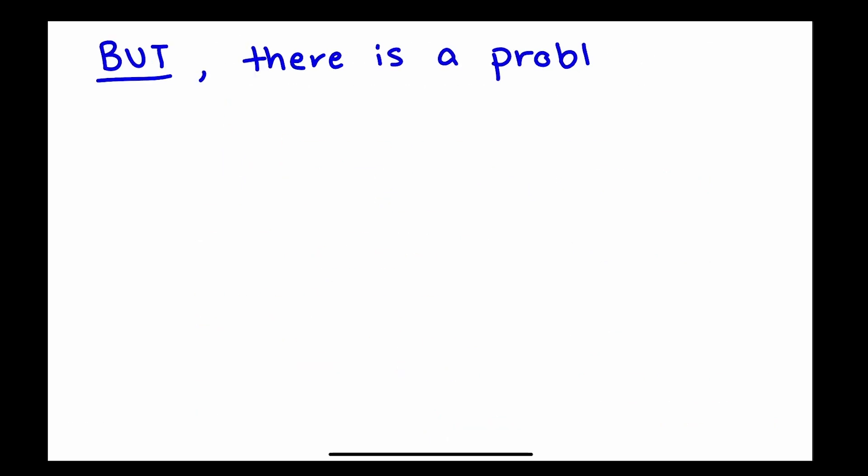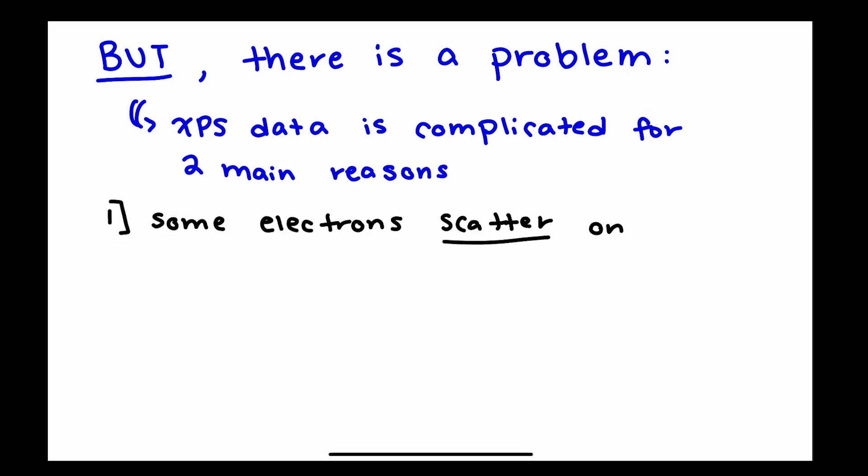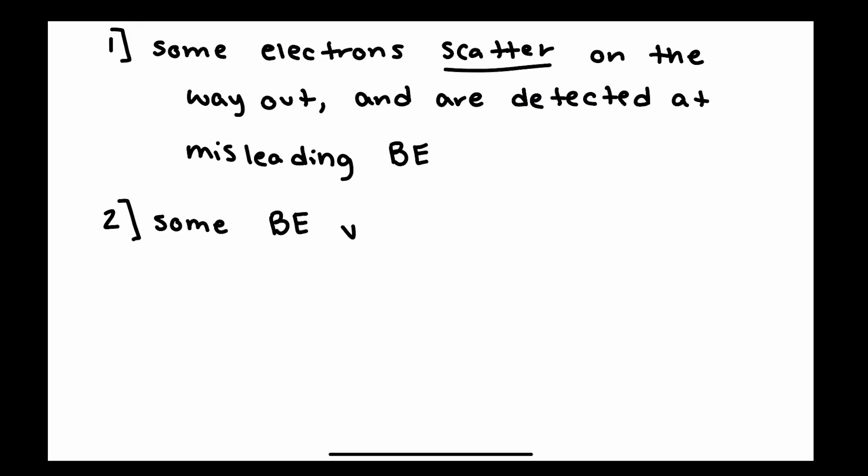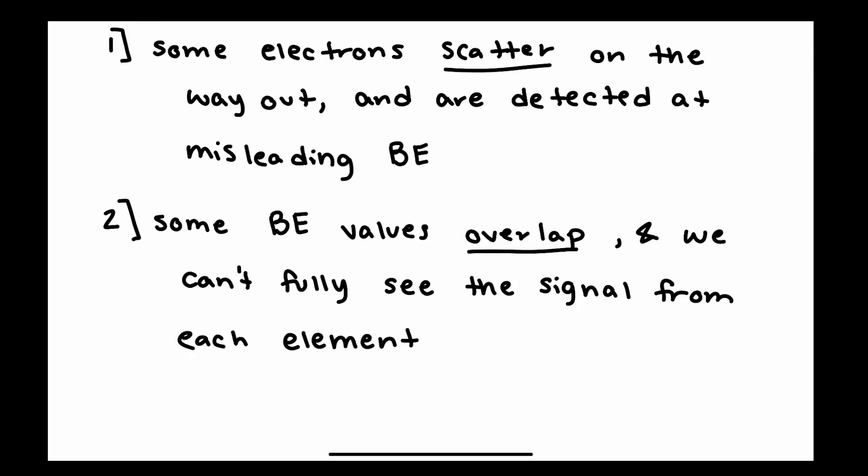There's still a problem here, and there are actually two main problems that we have to deal with within XPS data. The first being that some electrons scatter on the way out of the surface, and then we detect those at binding energies that don't tell us anything. And some binding energy values overlap, so we can't see the signal from each individual element.